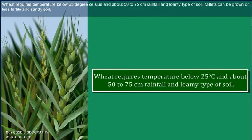Wheat requires a temperature below 25 degrees Celsius, about 50 to 75 cm of rainfall, and loamy type of soil.